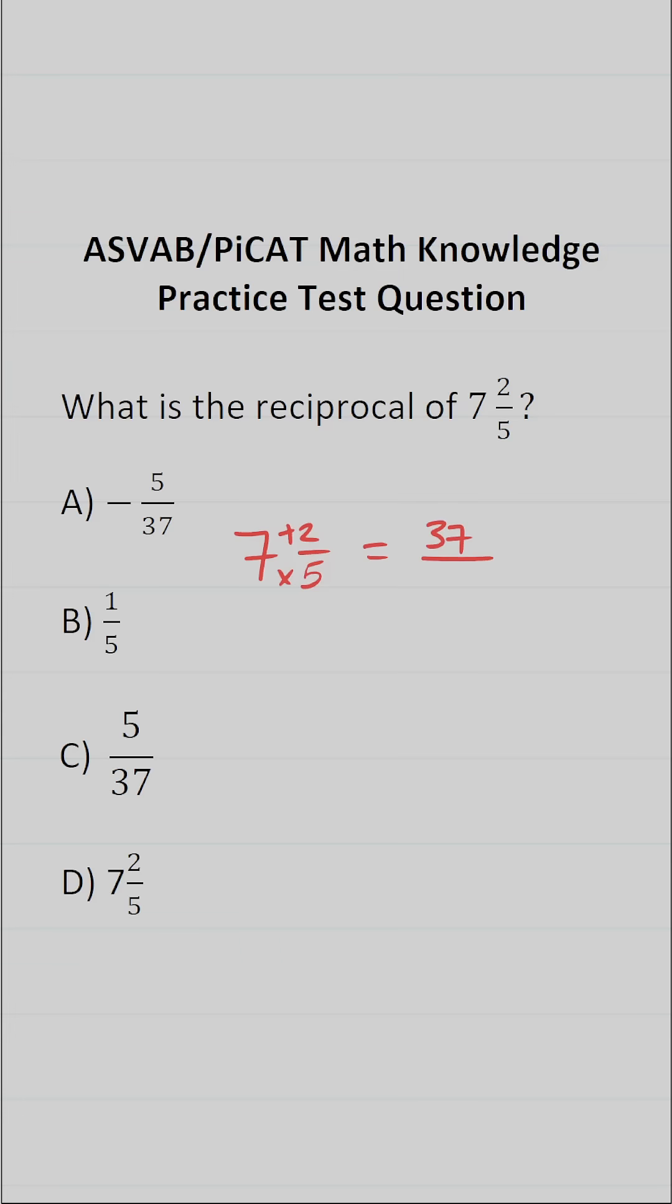So as an improper fraction, 7 and 2 fifths is going to be 37 over 5.